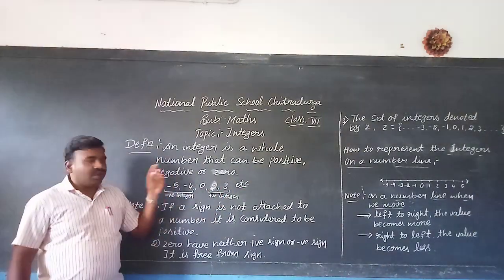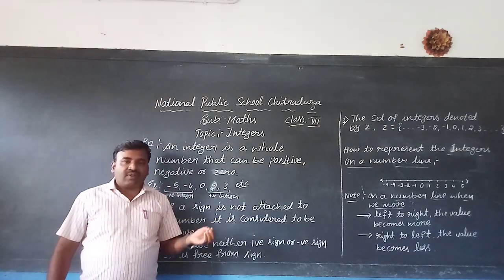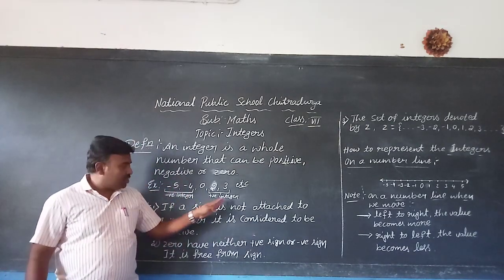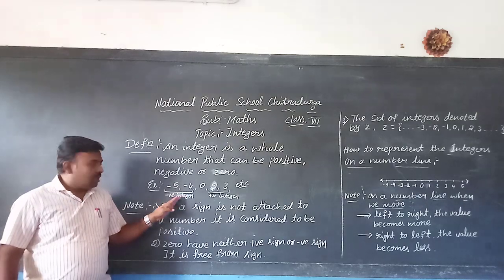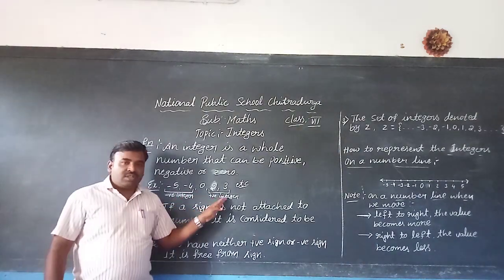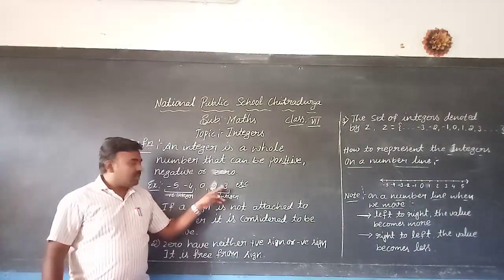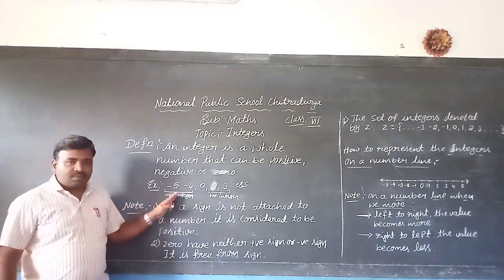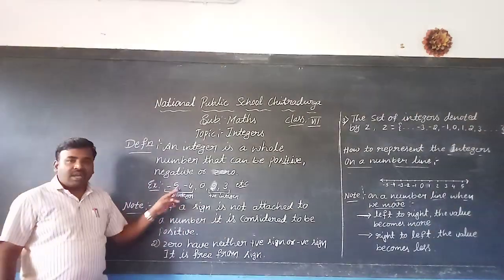So based on all these positive and negative, integers are classified into two types. First one is the positive integer and second one is the negative integer. Positive integers means the numbers which has the plus sign. Negative integer means the numbers which has the minus sign.